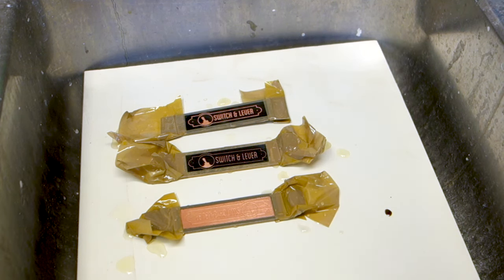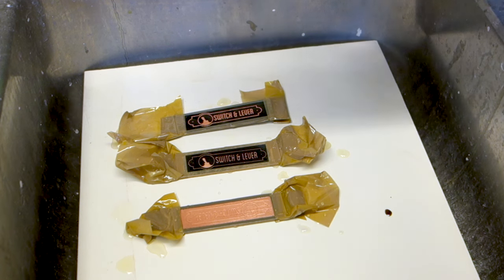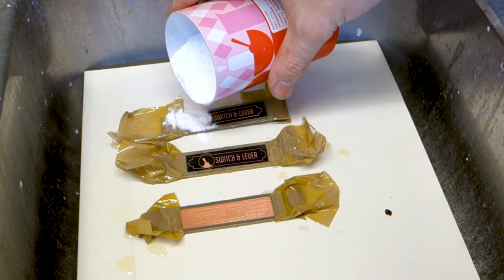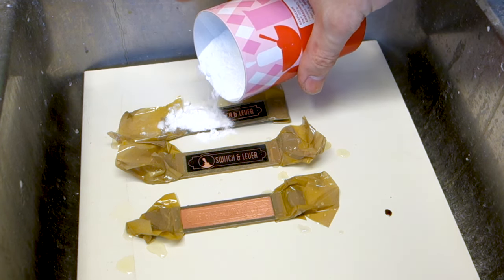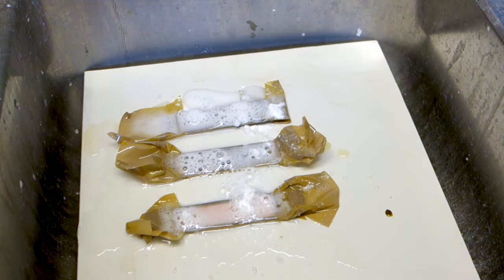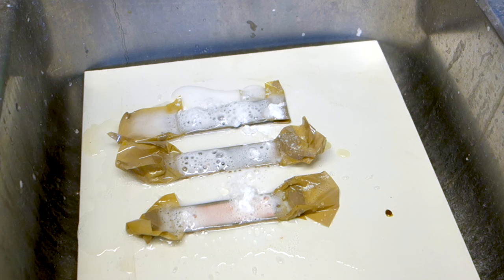As there is still acid on our plaques we need to stop it from reacting further. The easiest way is to use a base, something alkaline, to counteract the acidity of the ferric chloride. Common household baking soda is by far the easiest, and sprinkling it onto your plaques will cause a fizzy reaction as long as there is acid left.